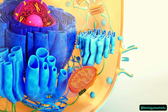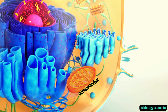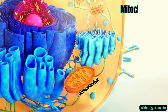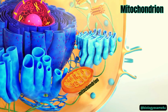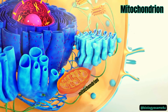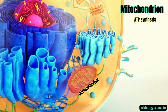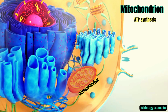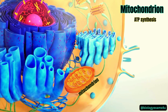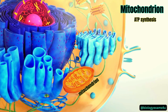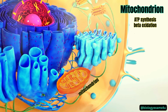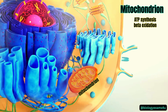The next organelle is the mitochondrion. Mitochondria are the powerhouses of the cell due to their ability to produce energy as ATP through electron transport and oxidative phosphorylation. This energy fuels all cellular activities. Mitochondria are also involved in beta-oxidation.